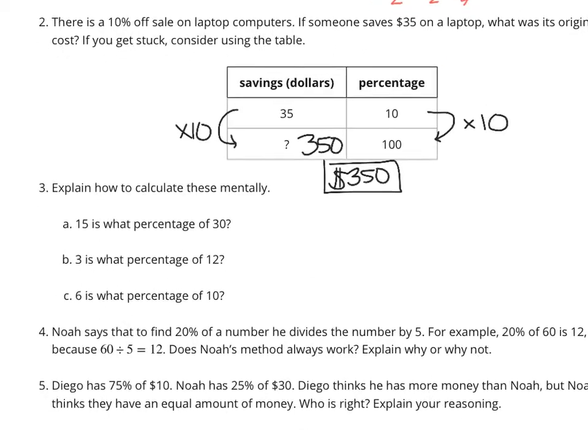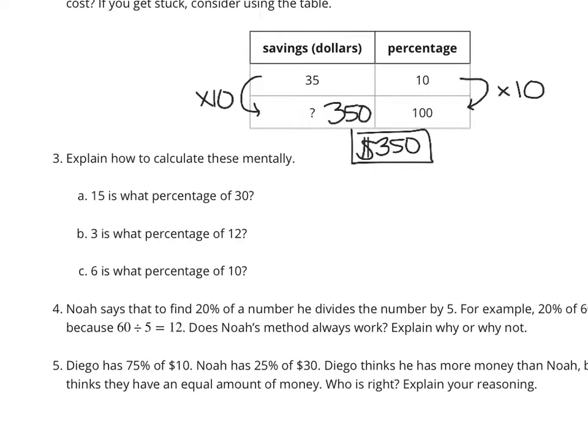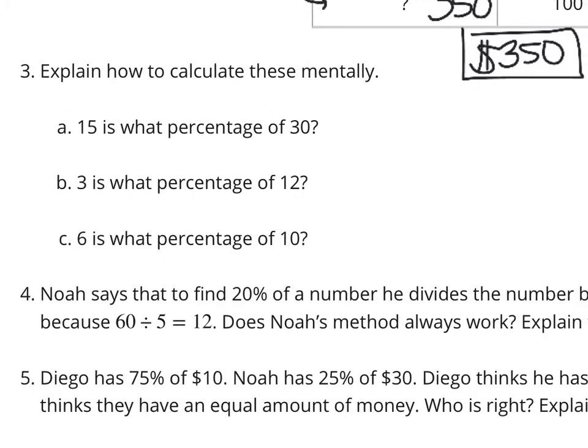Let's look at question 3 now. Explain how to calculate these mentally. 15 is what percentage of 30? Now, if you were to look at this using tape diagrams, you can say, OK, if my whole thing is 30, 15 looks like it's half of 30, right? 15 here is just half of the 30. And so, with that being half of 30, 1 half as a percentage is that benchmark percent of 50%.